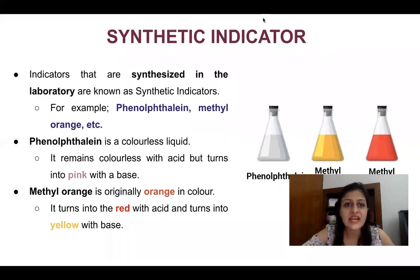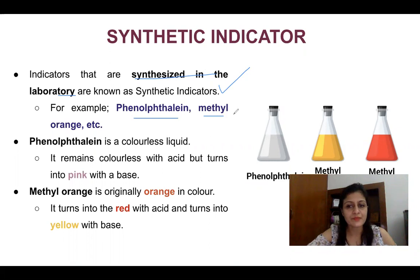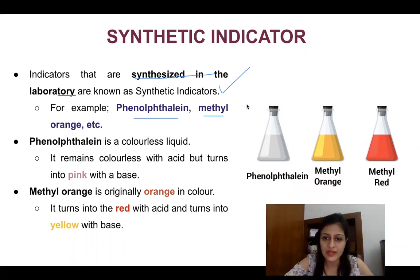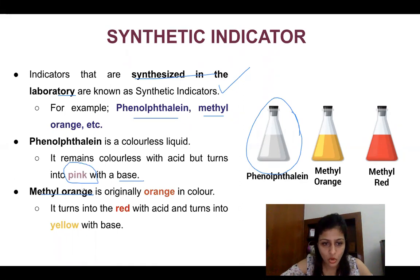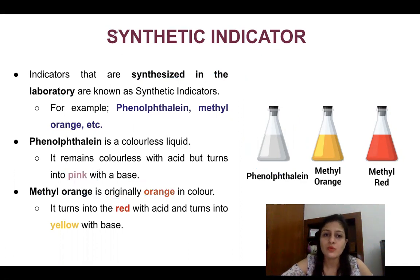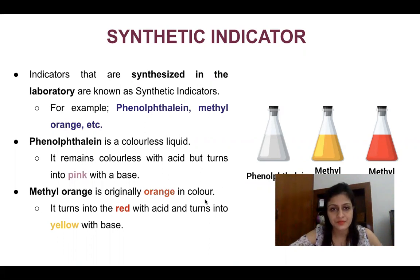The third type is synthetic indicators, which are synthesized in laboratories. One is phenolphthalein — it is a colorless liquid that remains colorless with acid but turns pink with a base. The second is methyl orange — its original color is orange, but it turns red with acid and yellow with a base.